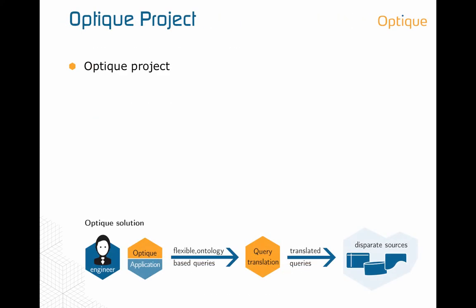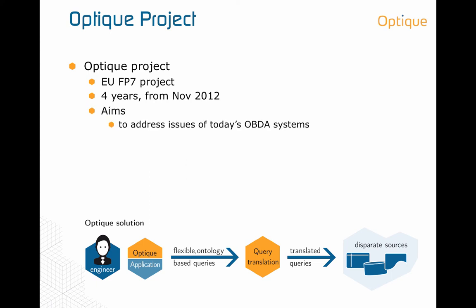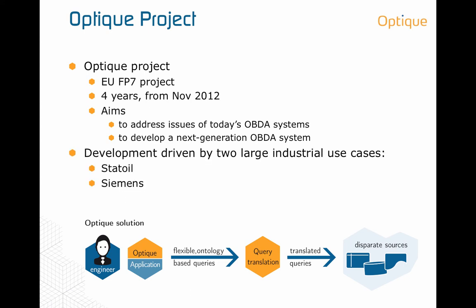Let me give you some information about the Optique project. It is an FP7 EU project running for four years from November 2012. Its aims are to address the issues of today's OBDA systems and to develop the next generation OBDA system. The development is driven by two large industrial use cases, one from Statoil and one from Siemens.